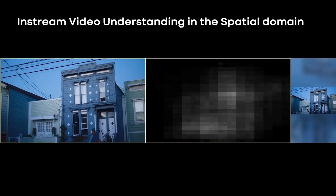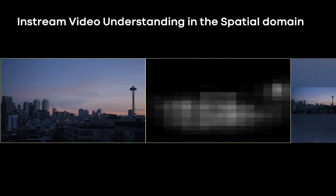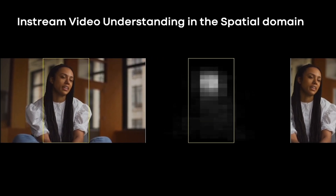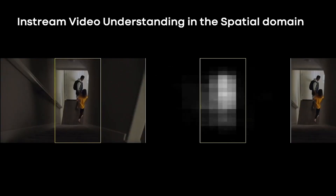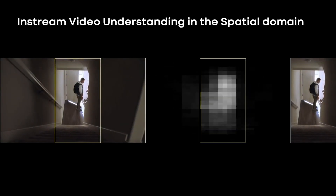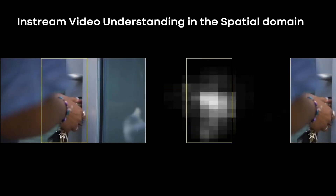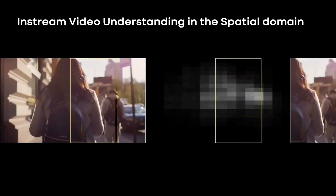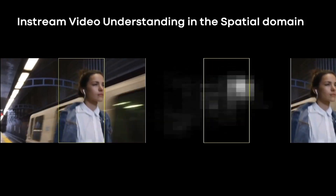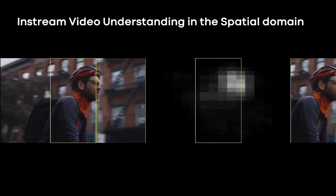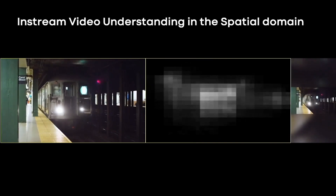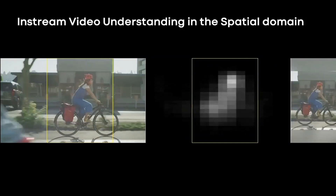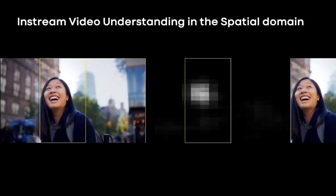For example, in the spatial domain, we identify the salient regions inside each frame, which enables a system to automatically reframe a horizontal video into a vertical one. The system can automatically change the aspect ratio of your videos from 16 by 9 horizontal video to either 1 by 1 or 4 by 5, which is important for sharing videos in platforms using a vertical format, such as Facebook's feed.